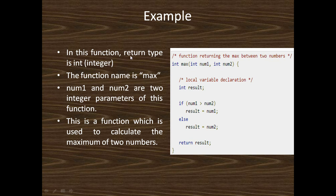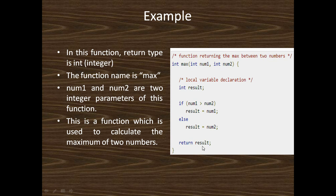In this function, return type is int and the function name is max. num1 and num2 are two integer parameters. The logic is: if num1 is greater than num2, then num1 is the maximum, so result equals num1; otherwise num2 is the maximum, so result equals num2. The value result is returned, and result is an integer value.